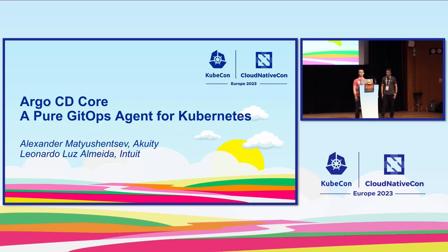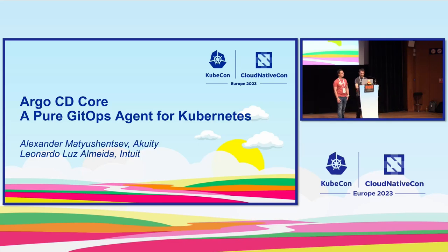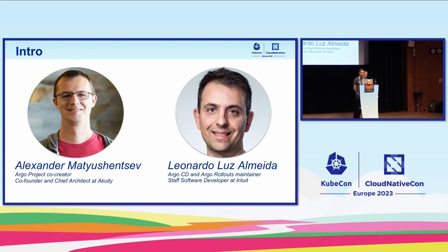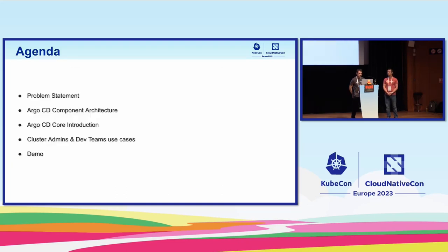My name is Alexander Matushentsov and I'm really happy to welcome you to our presentation. We're going to talk about using ArgoCD core as a pure GitOps agent for Kubernetes. I'm a longtime maintainer of the Argo project and currently chief architect at Akuity, a company that tries to move Argo to the next level. My co-speaker is Leonardo, one of the maintainers of Argo CD and Argo Rollouts projects, working as a staff software developer.